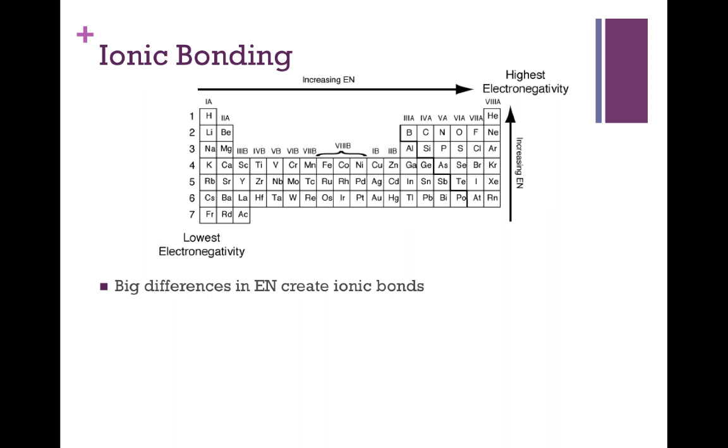Since we've established electronegativity as such a key factor here, it's very important to remember that last chapter we identified patterns in electronegativity. Ionic bonding is dependent on having very big differences in electronegativity, and we recall that our highest electronegativity atoms are here on the top right, and our lowest electronegativity atoms are here on the bottom left. The bigger the difference, the more likely you are to get an ionic bond.